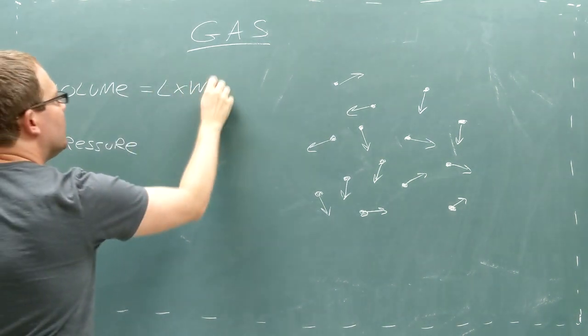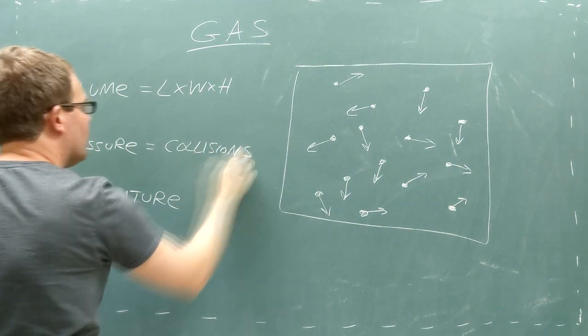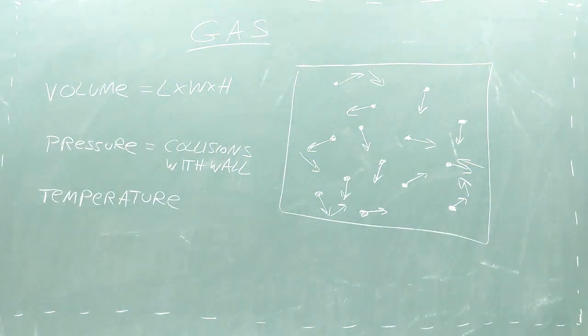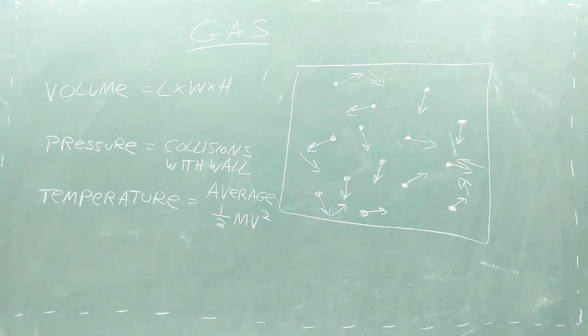The volume of the gas is the amount of space that all the particles take up, usually bounded by a box. The pressure of the gas is the strength and frequency of the collisions between the particles and the walls of the box. And the temperature of the gas is the average kinetic energy of all the particles in the gas.